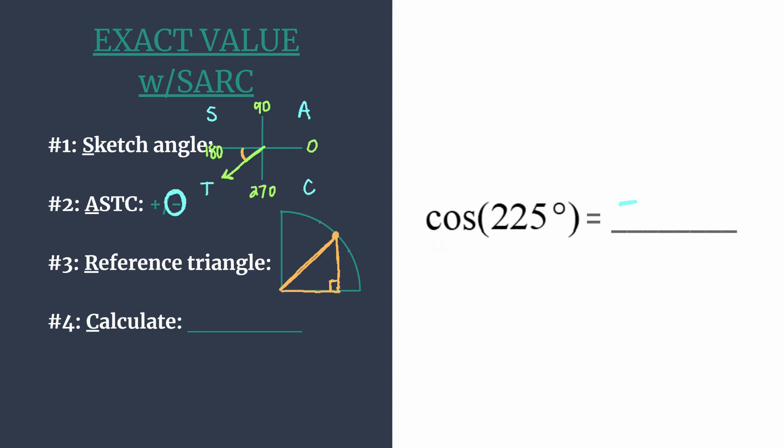We know that the coordinates that correspond with this triangle are going to be the same. Both will be square root of two over two.